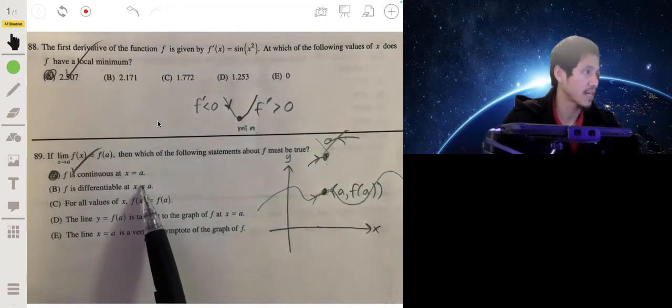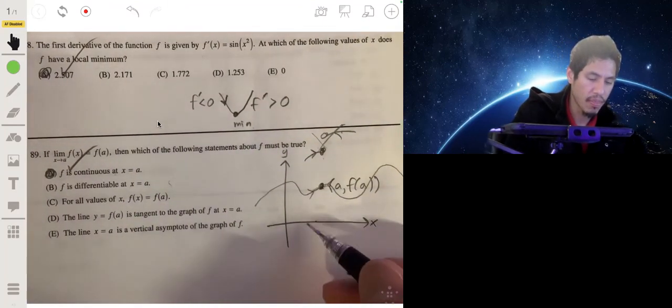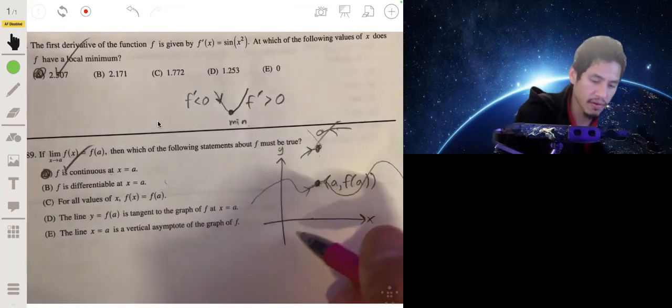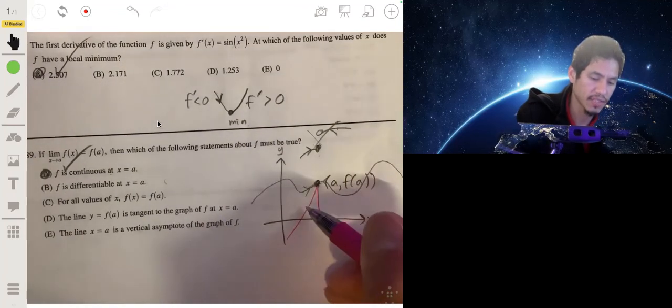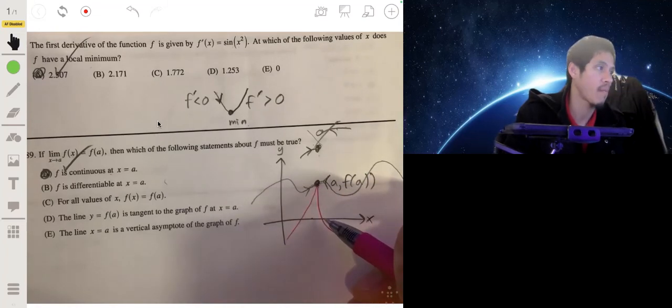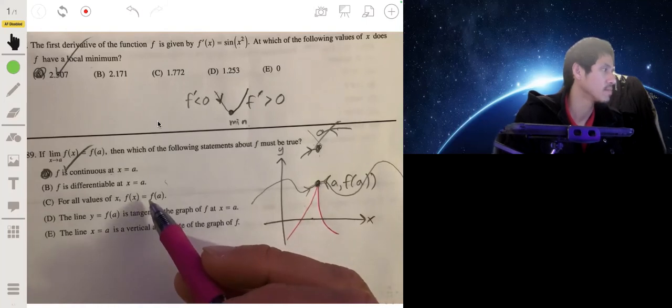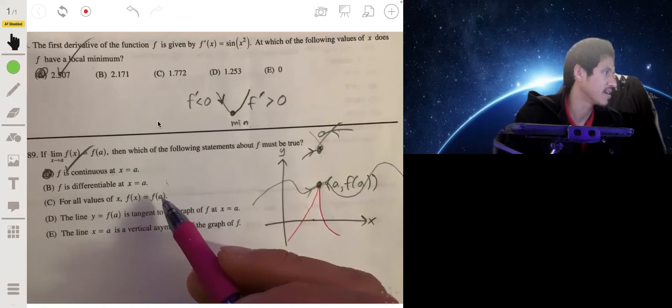Because you could have something like, you have a graph that does this and it's not differentiable because the left-hand derivative would not be the right-hand derivative. So it doesn't have to be that, it doesn't have to be this that wouldn't even make sense, definitely not C.